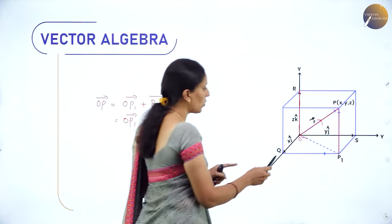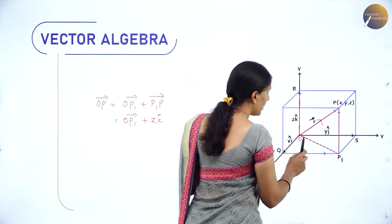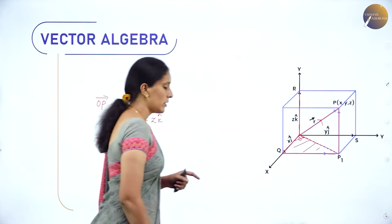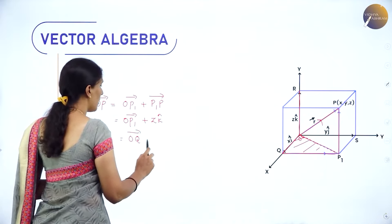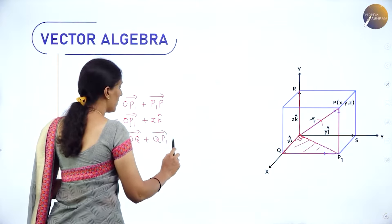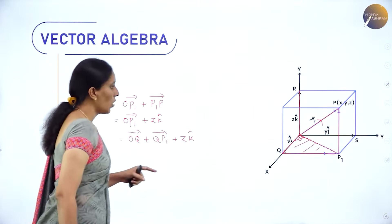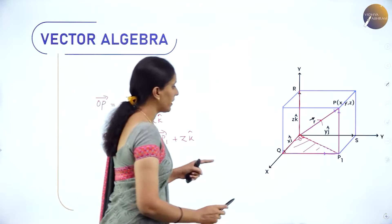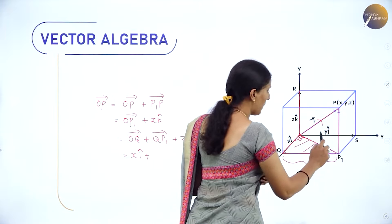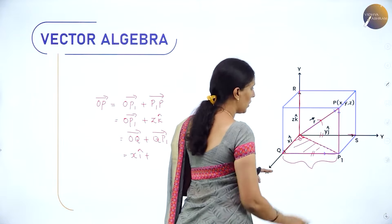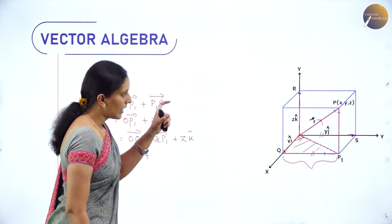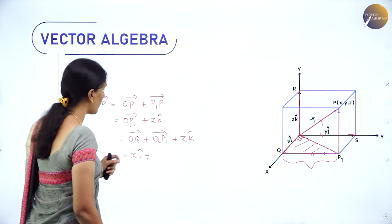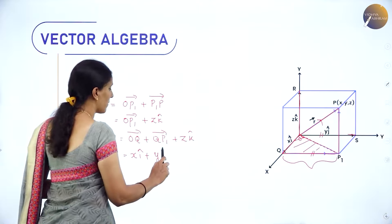Using the triangular law of addition, vector OP = OP1 + P1P. The distance P1P is along the z-axis, so it equals z·k̂. Therefore OP = OP1 + z·k̂. For OP1, using the triangular law again: OP1 = OQ + QP1. So OP = OQ + QP1 + z·k̂. OQ is x·î. QP1 is parallel to OS with the same magnitude, so QP1 = y·ĵ.